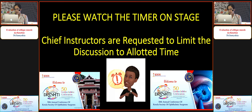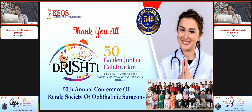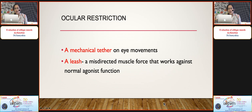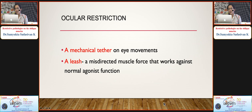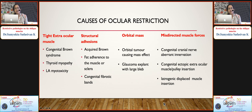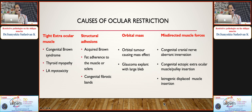Restrictive pathologies on obliques: ocular restriction results from either a mechanical tether on eye movements or a leash — a misdirected force working against normal agonist function. Causes can be classified into four groups: a tight extraocular muscle as in congenital Brown syndrome, thyroid myopathy, or local anesthetic myotoxicity; structural adhesions as in acquired Brown syndrome, fat adherence, or congenital fibrotic bands; orbital mass or a glaucoma explant; and misdirected muscle forces.